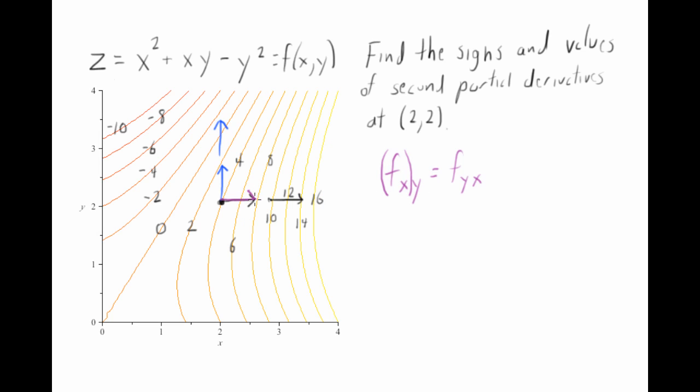So here's another arrow for f sub x. But now I'm moving in the y direction. And I'm thinking about how my steepness in the x direction is changing as I increase in y. All these slopes are positive. But you can see that as we move up, it looks like the lines are getting closer together. In other words, we're getting more and more steep in the x direction as we increase in y. So I'm going to expect this to be positive.